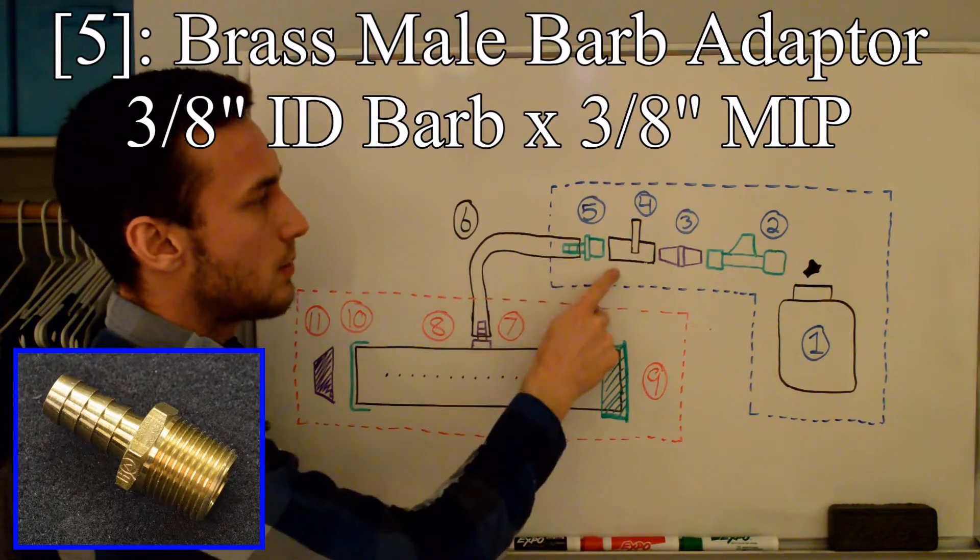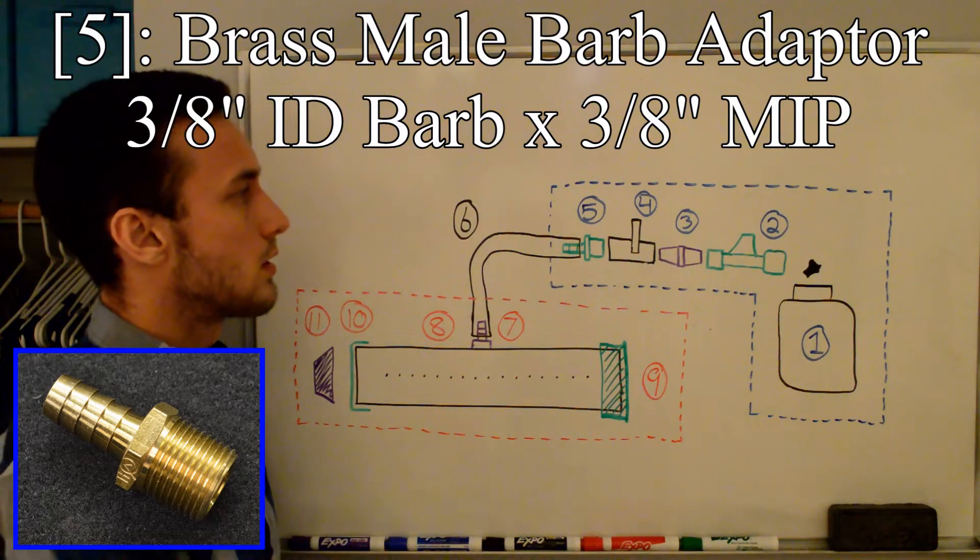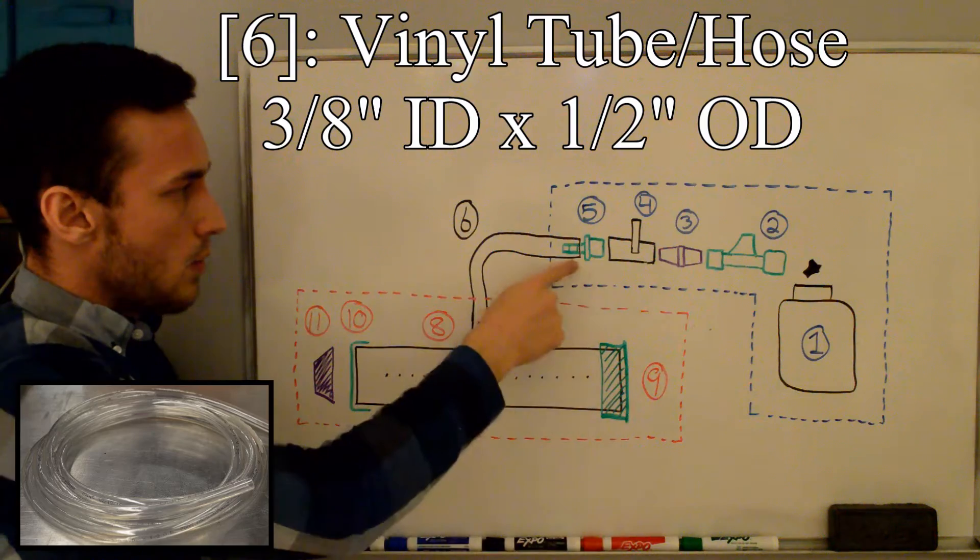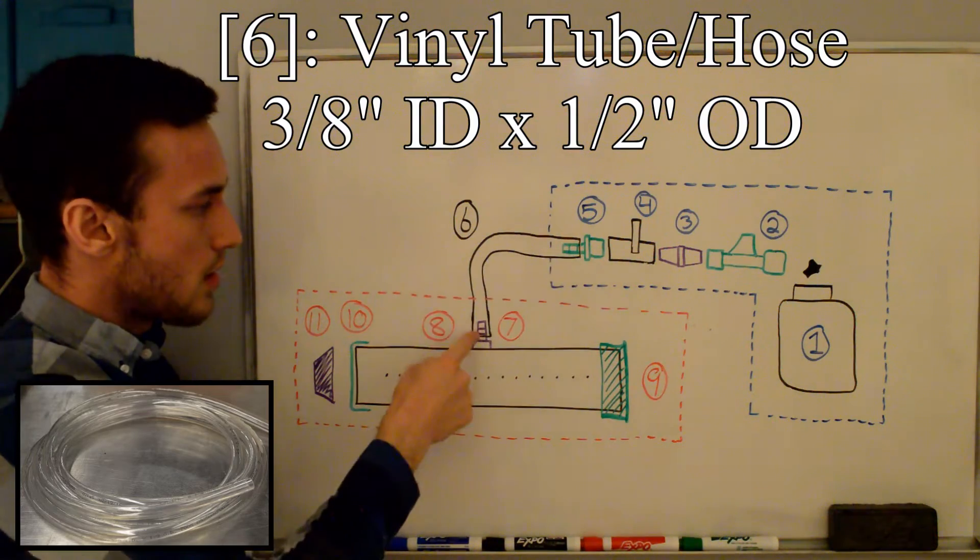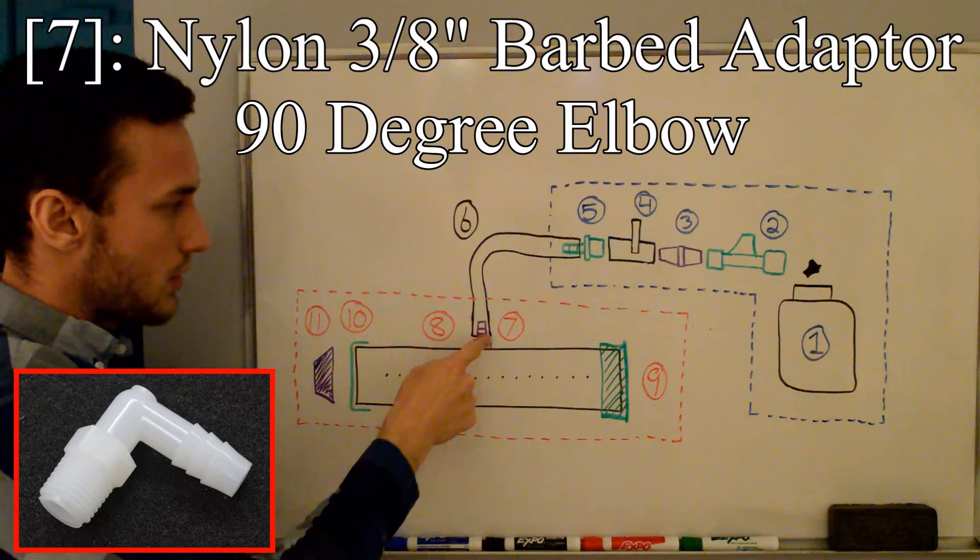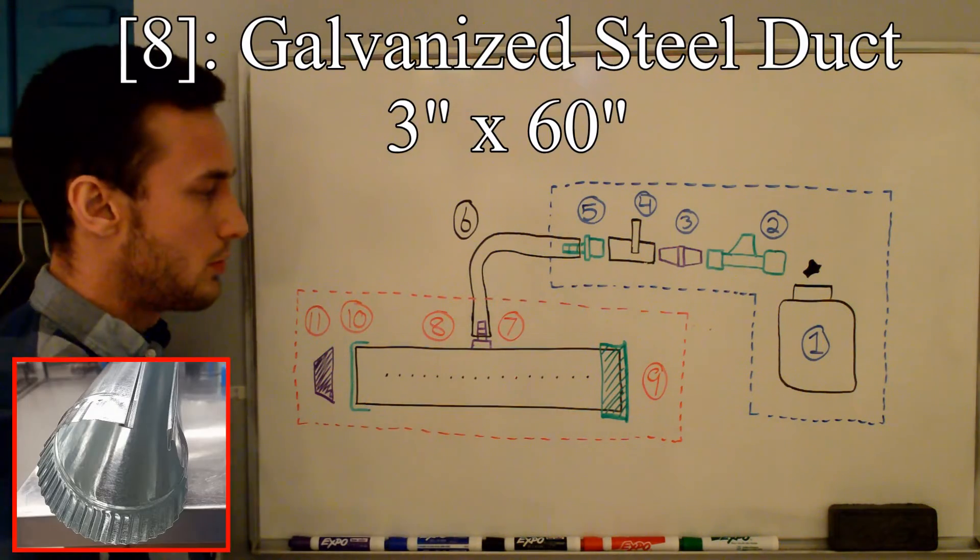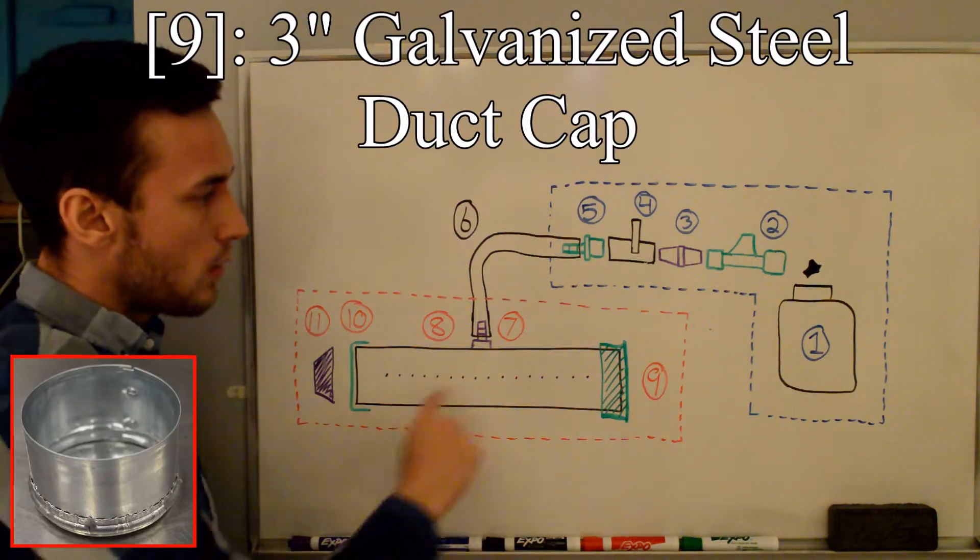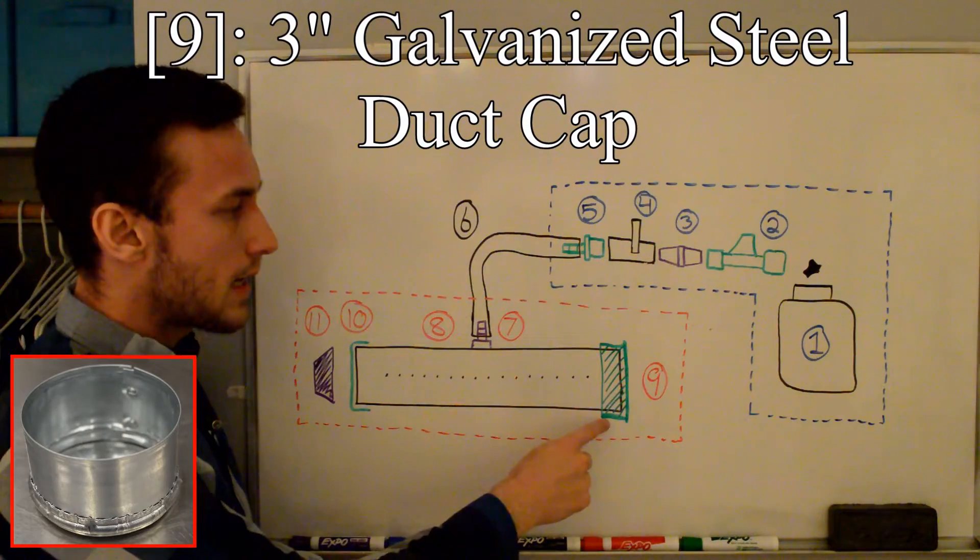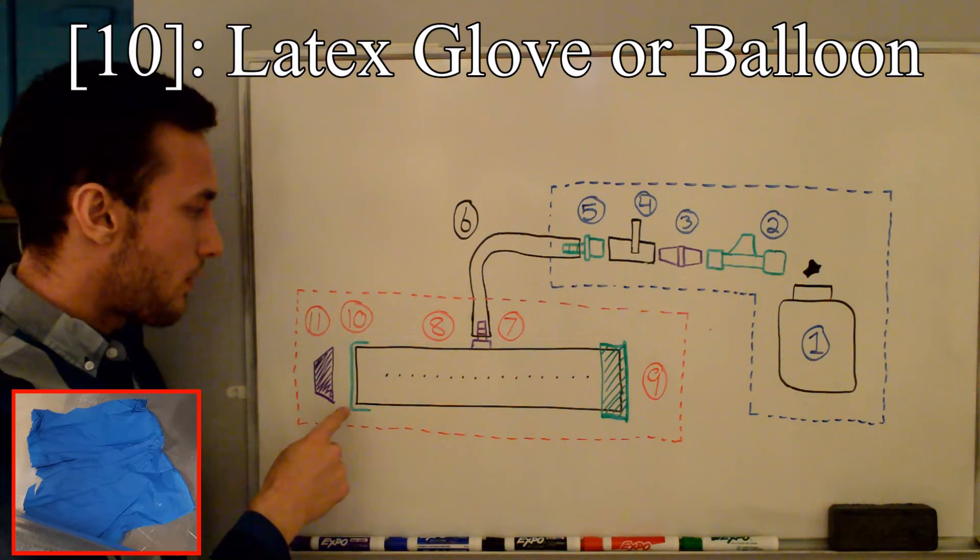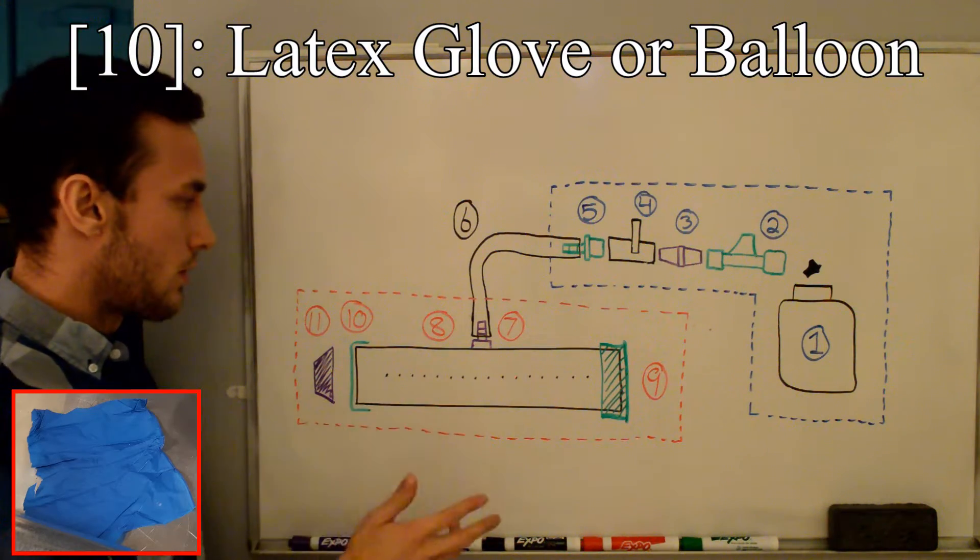And then we need some way to attach the ball valve to the hose that we'll be using, so we're going to use a barbed adapter fitting five. Then we have a flexible hose that runs from that barbed fitting to another barbed fitting, and that's number seven, which is attached to the galvanized steel duct that we'll be using for the tube, that's number eight. On one side of the tube is a flat cap, that's number nine. And on the other side, we have a flexible diaphragm, latex glove, balloon, whatever you want to call it, that's number ten.